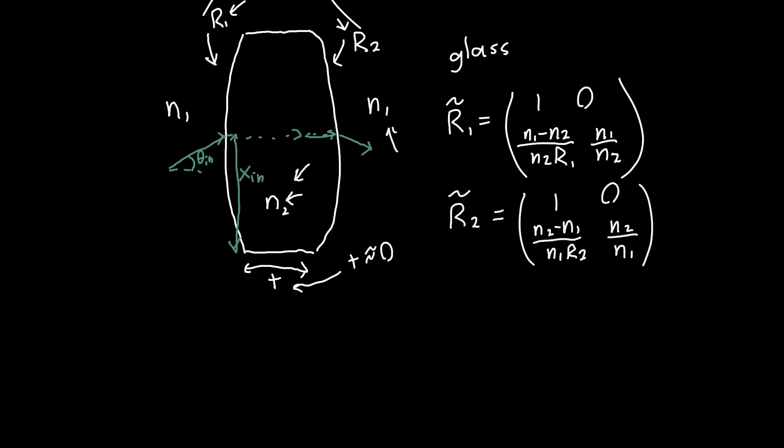All we need to do now is combine these two. Since our ray vector x in, theta in first gets acted on by R1 because we're first passing through the R1 surface, and then gets acted on by R2, our overall transfer matrix for our thin lens is just R2 R1.